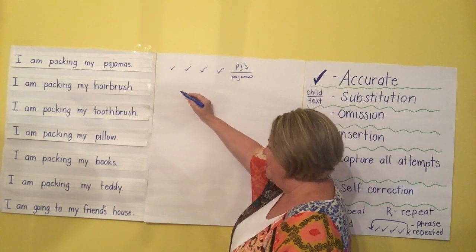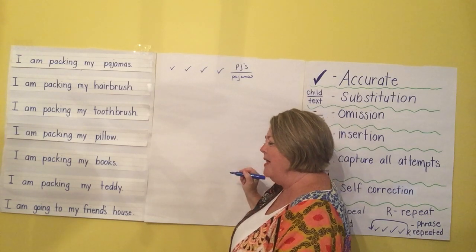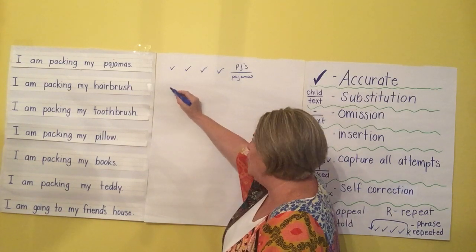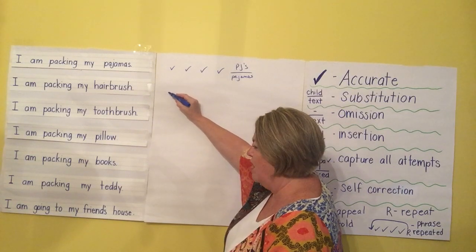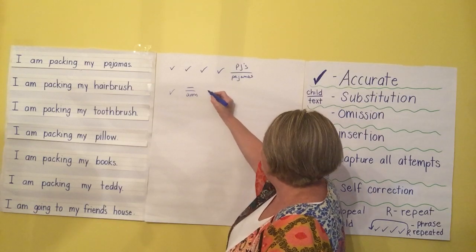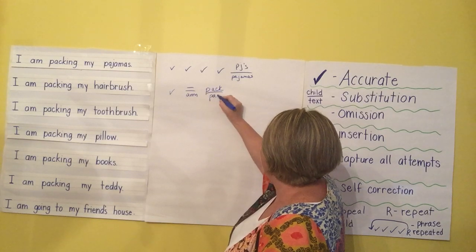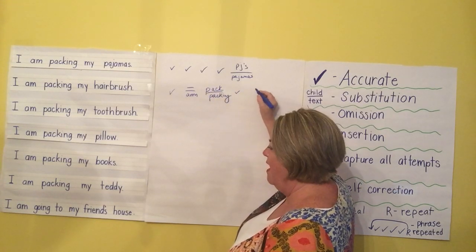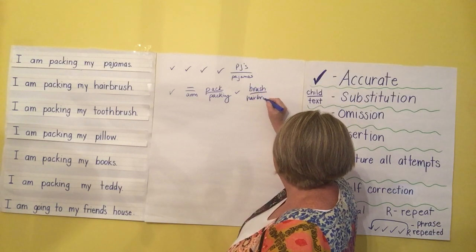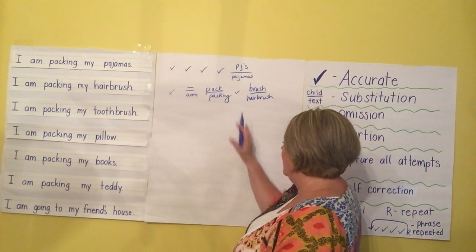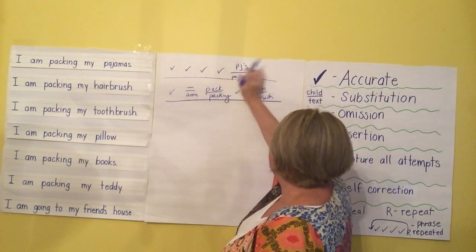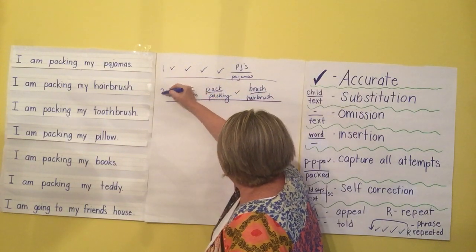On the next row, the child says: 'I pack my brush.' So if you scored this row, this is what it should look like: checkmark for 'I,' they skipped the word 'am' so a dash on top over 'am,' then they said 'pack' for 'packing' — that's a substitution — then checkmark for 'my,' and then they said 'brush' for 'hairbrush' — another substitution.